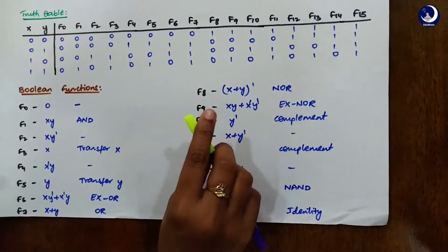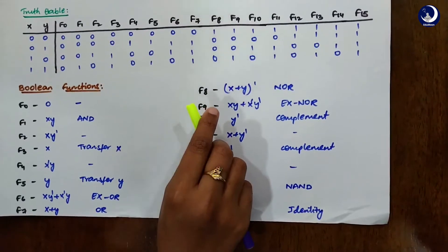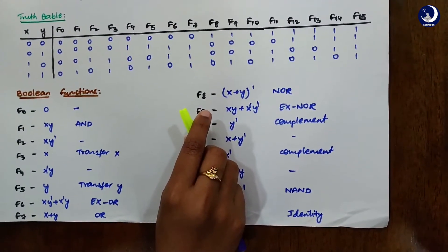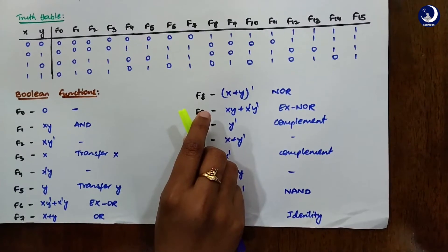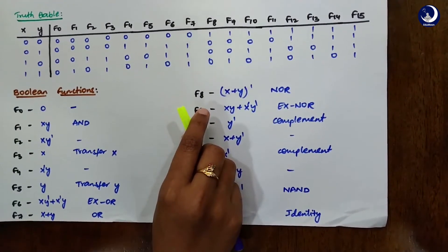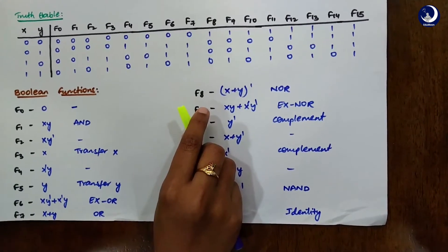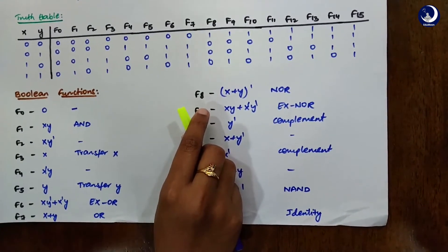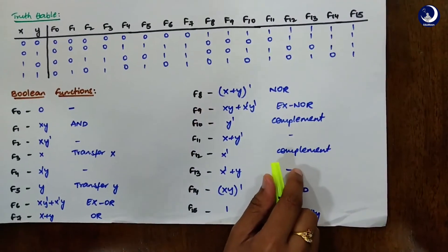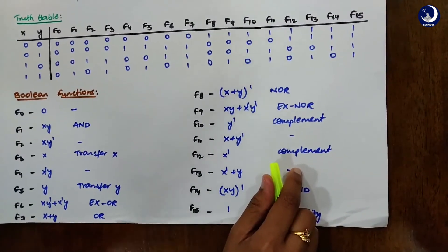Our next topic in this chapter is digital logic gates. If you go back to the Unit 1 starting videos, I have given an entire brief description on digital logic gates, so there's nothing to worry about — all the required fundamentals are already covered. There is nothing new in this particular topic, and with this we have completed our Unit 2.